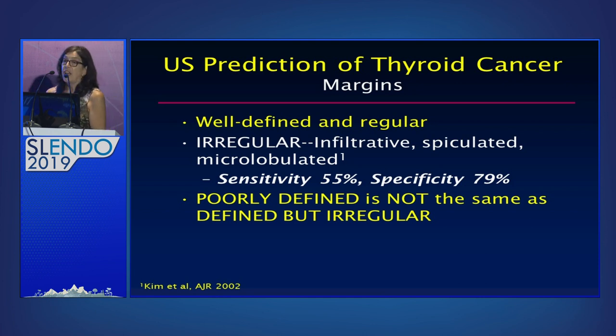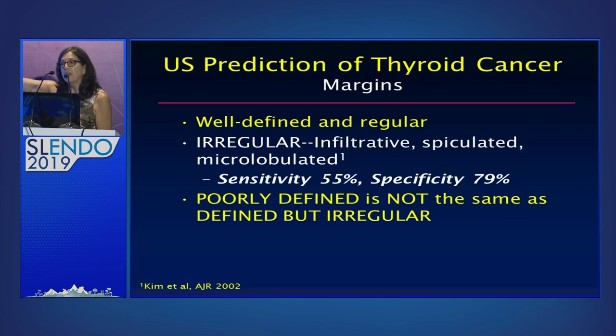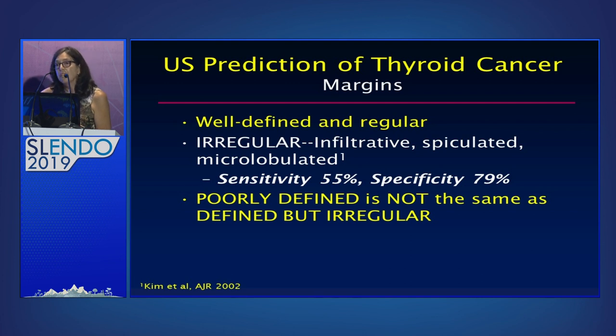The challenging part is that sometimes you can't see that margin. Irregular means you can see it and it's not smooth. Sometimes you cannot see the interface between the nodule and the surrounding thyroid — so it's poorly defined. But poorly defined is not the same thing as a clear margin that is jagged and irregular.